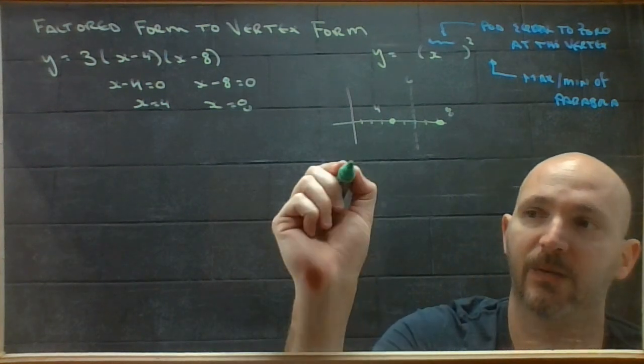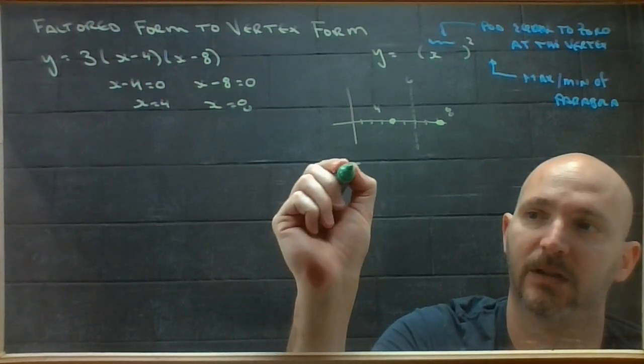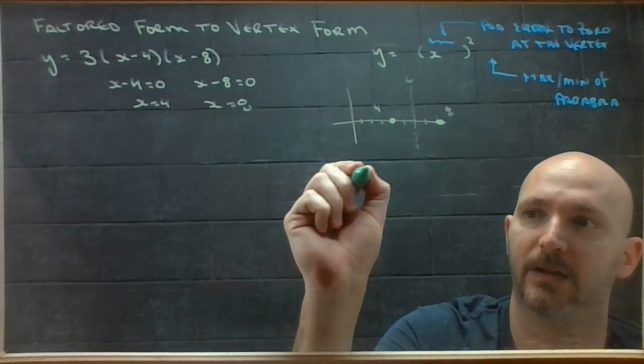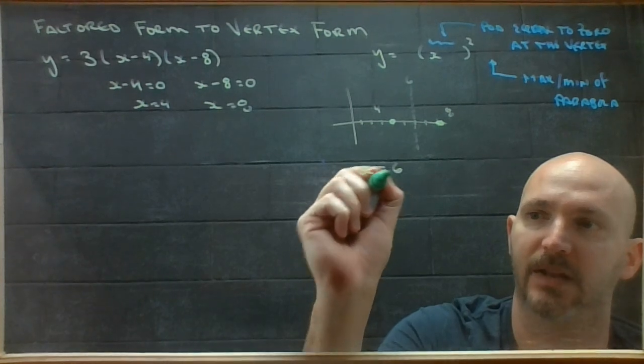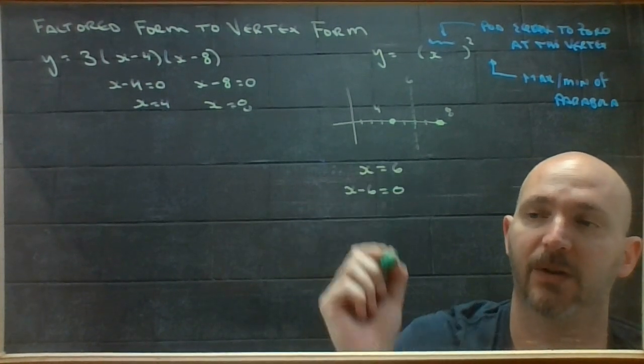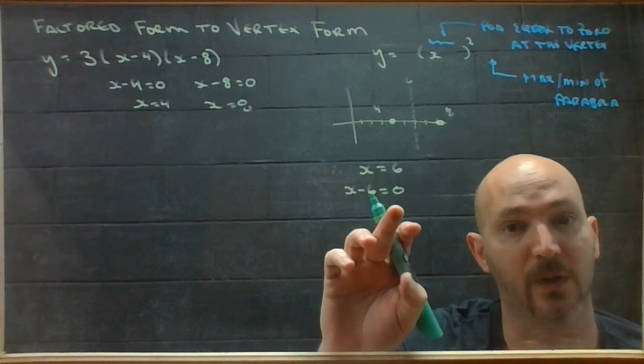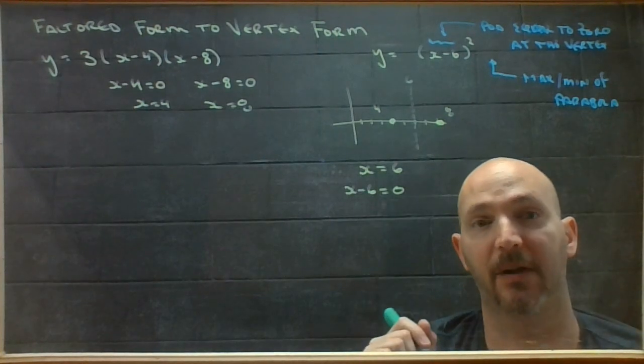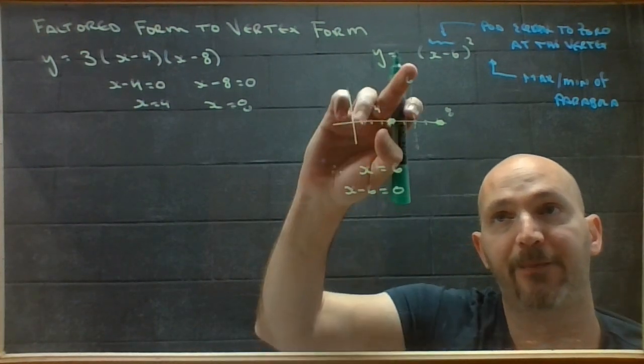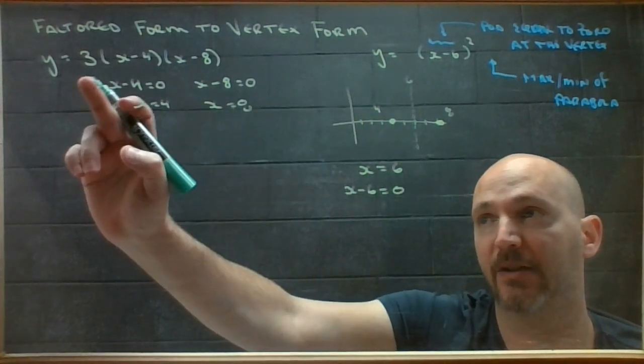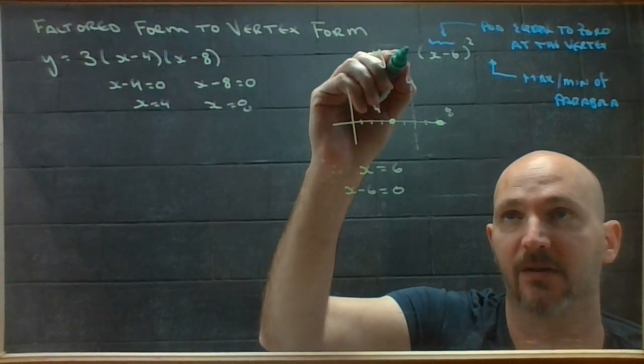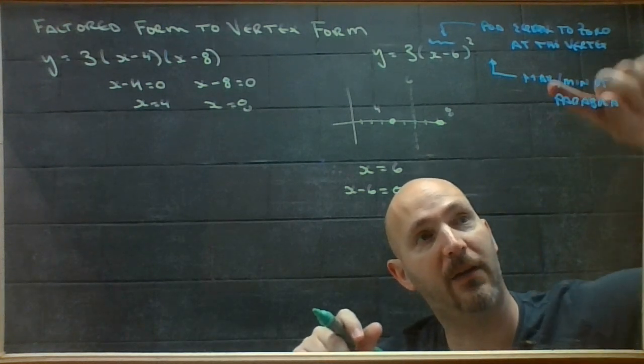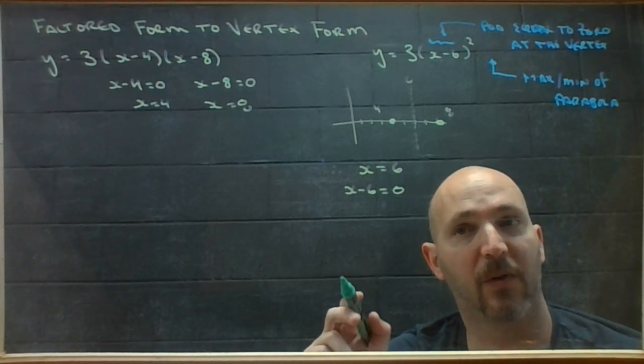So I know that, therefore, the vertex is at x equals 6, and so x minus 6 would equal zero at the vertex. So that's my pod for here. I've got that part. I also need a transformation factor. As always, transformation factors are the same in every single form.